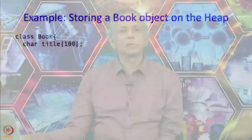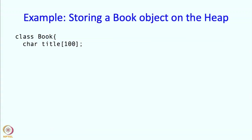So let us take an example: we want to store a book object on the heap. So here is our book object — it is a class book with title and price. Maybe I should call it a struct because I am using the members directly, so perhaps I should have called it a struct, but anyway.